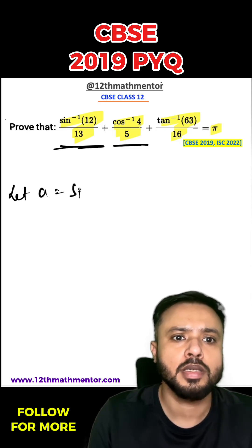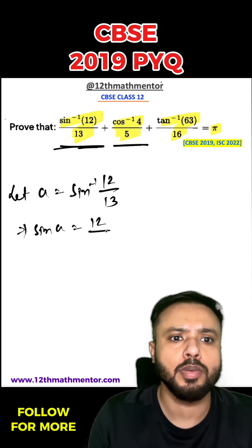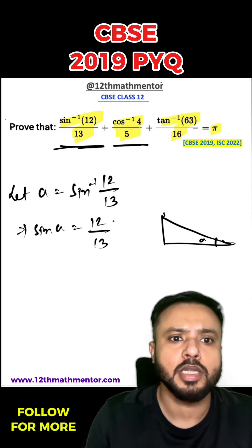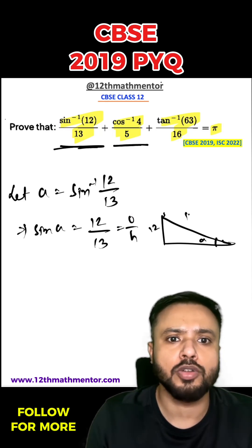Let's assume A as sin inverse 12 by 13, which means sin A equals 12 by 13. If you consider a right angle triangle, sin is opposite upon hypotenuse, so opposite is 12 and the hypotenuse would be 13. Using Pythagoras we can find out the adjacent, which will come out as 5.